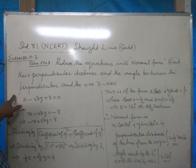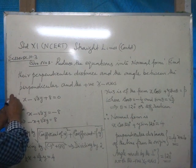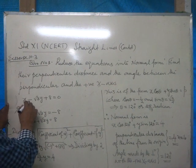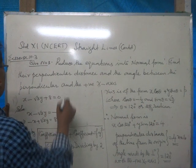Question given is 1. x minus root 3y plus 8 equals 0.